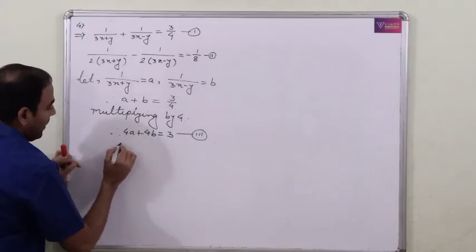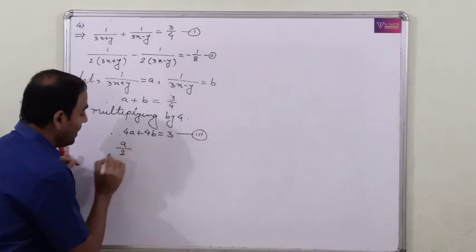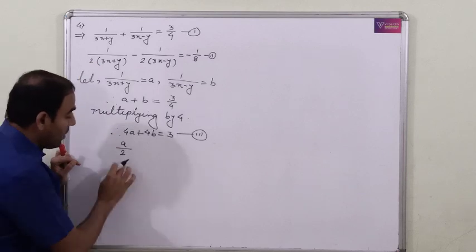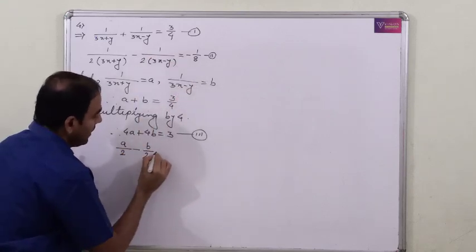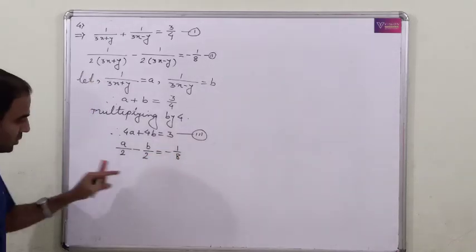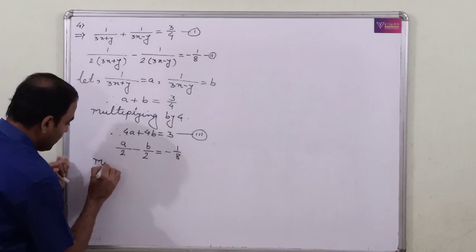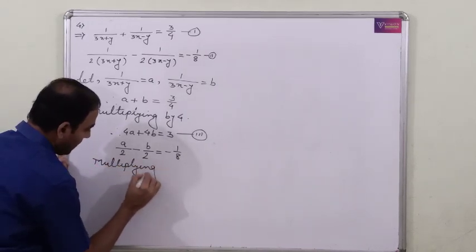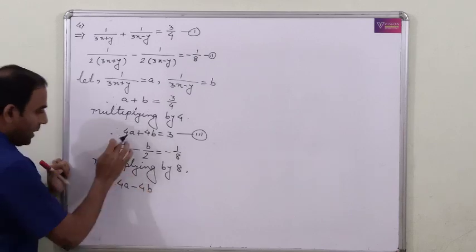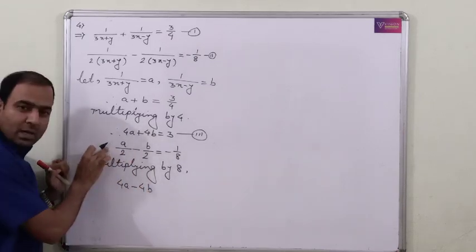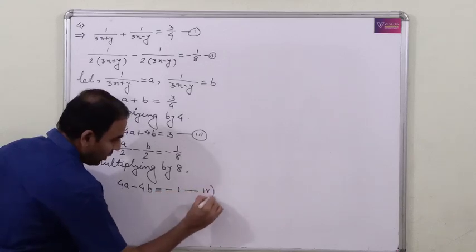For the second equation, 1 upon (3x plus y) is A, but 2 is in the denominator so it becomes A by 2 minus B by 2 equals minus 1 by 8. Multiplying by 8, we get the fourth equation: 4A minus 4B equals minus 1.